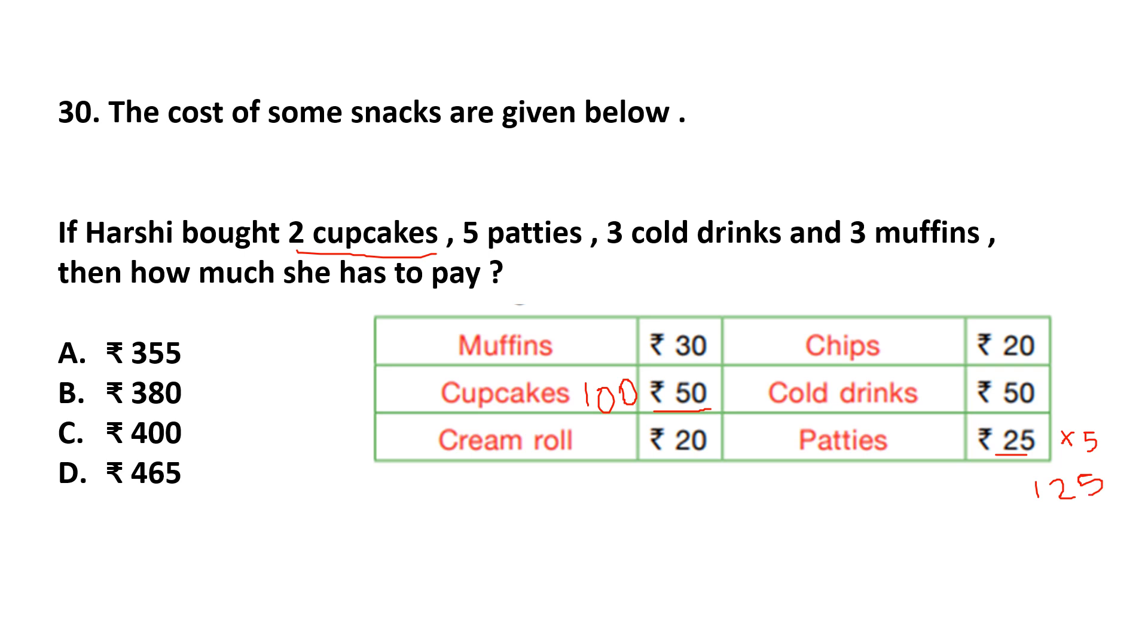3 cold drinks. 1 cold drink is Rs. 50, so 3 cold drinks is Rs. 50 multiplied by 3. That means it is 150. And 3 muffins. Cost of 1 muffin is Rs. 30. 3 is Rs. 30 multiplied by 3, Rs. 90. If we add 90 plus 100 plus 150 plus 125, total cost is Rs. 465. Answer is Option D. Kids, if you understand this question, please like the video.